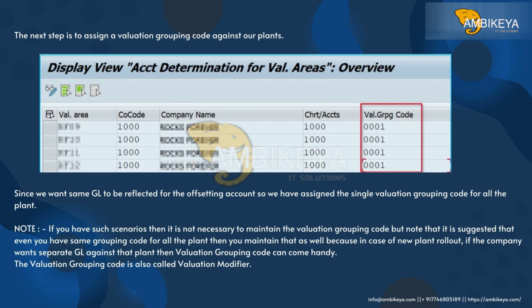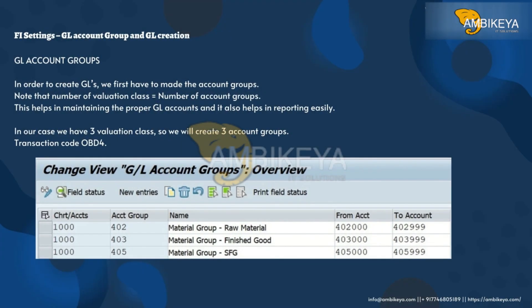Note: if you have such a scenario, it is not necessary to maintain the valuation grouping code. However, it is suggested that even if you have the same grouping code for all plants, you still maintain it — because in case of a new plant rollout, if the company wants a separate GL for that plant, the valuation grouping code can come in handy. The valuation grouping code is also called the valuation modifier.